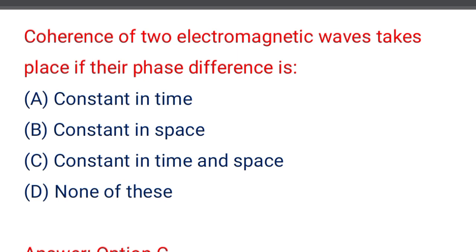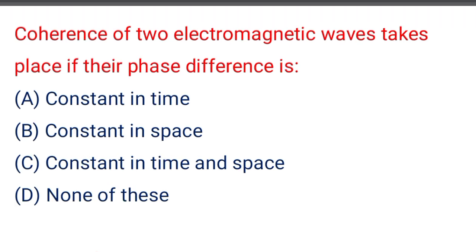Next question: coherence of two electromagnetic waves takes place if their phase difference is — option A: constant in time, option B: constant in space, option C: constant in time and space, option D: none of the above. The correct answer is option C: constant in time and space.